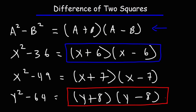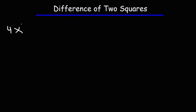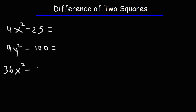So that's what you need to do in order to factor a difference of two squares. Now let's try some harder examples. We have: 4x squared minus 25, 9y squared minus 100, 36x squared minus 121, and finally 49x squared minus 169y squared. Feel free to pause the video and work on these problems.